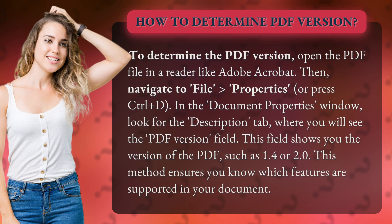In the Document Properties window, look for the Description tab where you will see the PDF version field. This field shows you the version of the PDF, such as 1.4 or 2.0. This method ensures you know which features are supported in your document.